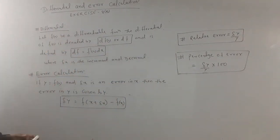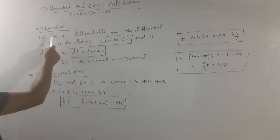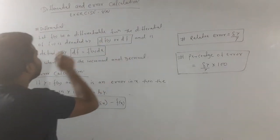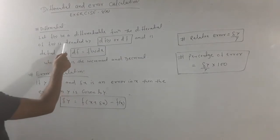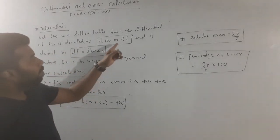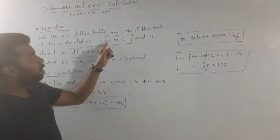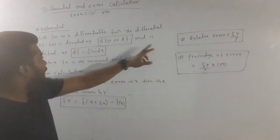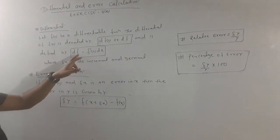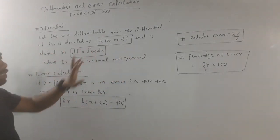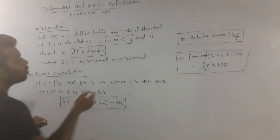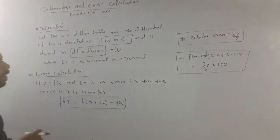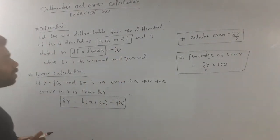First, we will find the differential. Let f of x be a differentiable function. Then the differential of f of x is denoted by d of f(x) or df, and it is defined as df is equal to f'(x) into dx. So the formula we use: df equals f'(x) dx.